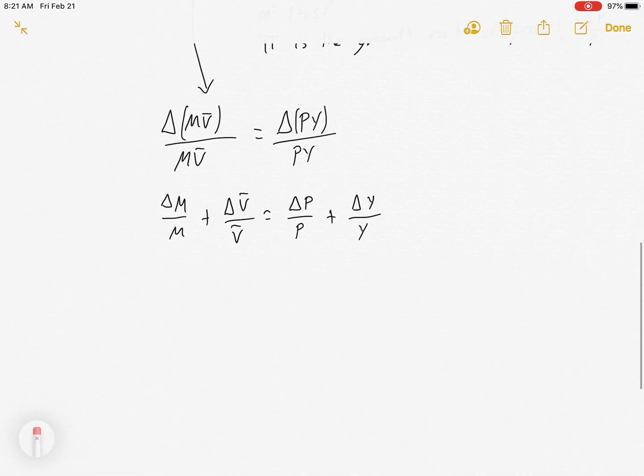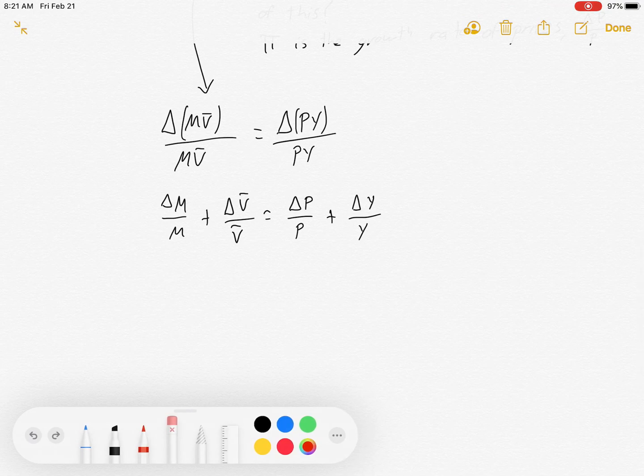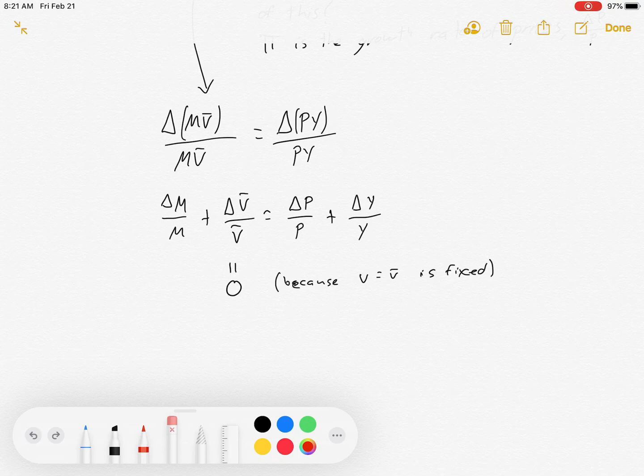Now, side note: V bar, we've made it be exogenous, we've made it be fixed, so its growth rate is zero. It doesn't change. So that's convenient, because now we just get that the growth rate of the money supply equals the growth rate of prices plus the growth rate of real GDP.